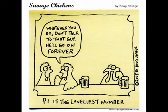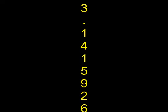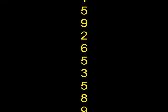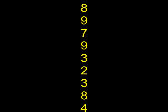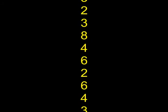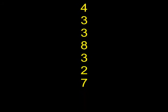They obtained this by using their knowledge of the perimeters of hexagons. Pretty close, but the actual value of pi is infinite. It would take me too long to tell you all of the digits. So here are the first 30: 3.14159265358979323846264338327.